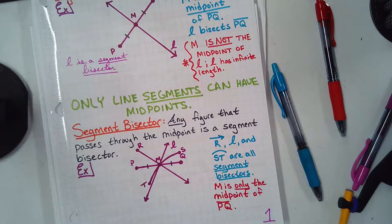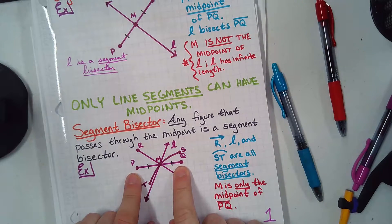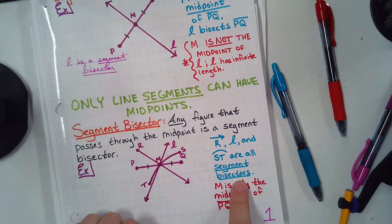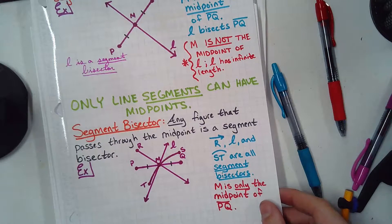Line L can't be the midpoint of line L because lines go on forever, right? Heroes get remembered. Legends never die, and lines are legends. So, M is the midpoint of PQ. I like that same length. So, ray R, line L, and arc ST are all segment bisectors. M is only the midpoint of PQ. Questions, comments, concerns, other than for myself and my safety.